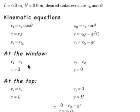So at the window, when it's starting out, the y velocity is the initial y velocity, the x velocity is the initial x velocity, and x and y are both zero.